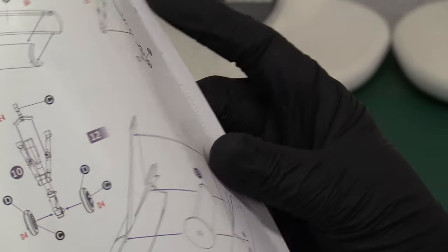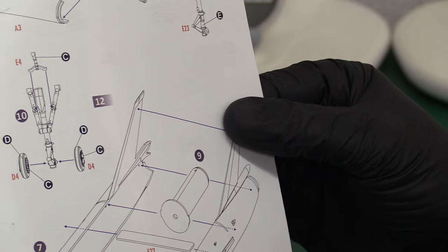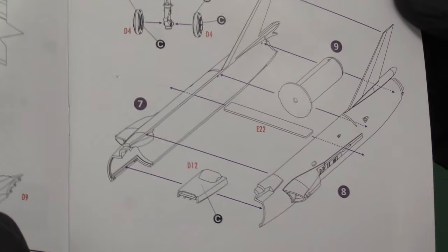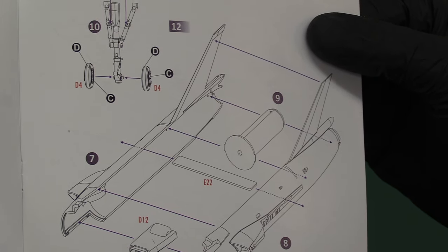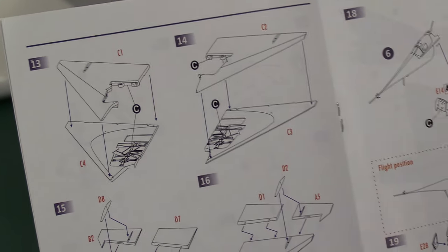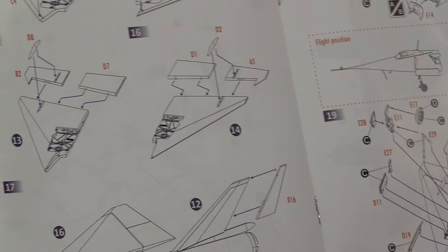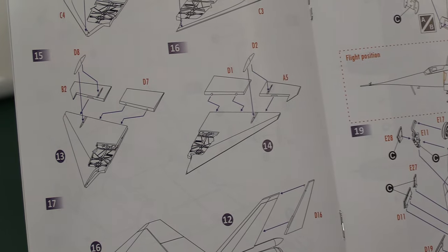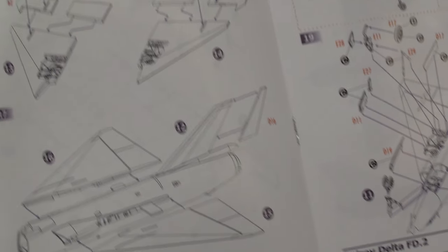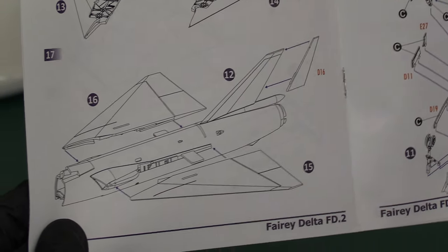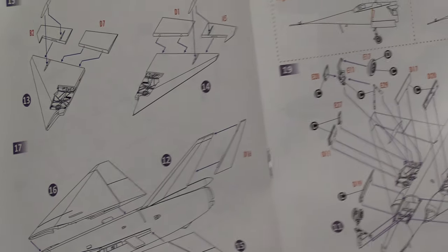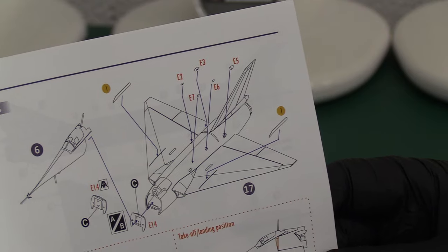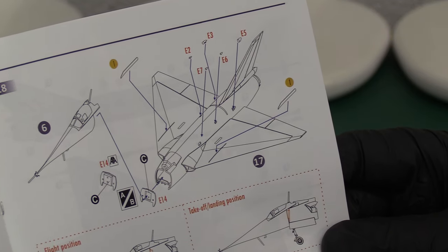Then we've got our canopy coming in, aerial going down, intakes that are going to be nice and sharp looking. Looks like it's the rear of the jet engine. I don't think it's an afterburning engine on this one. Then you've got your main legs there. We've got the nose leg coming in here and your two fuselage halves coming in, clamping around your engine assembly that you've built, the engine tube obviously.